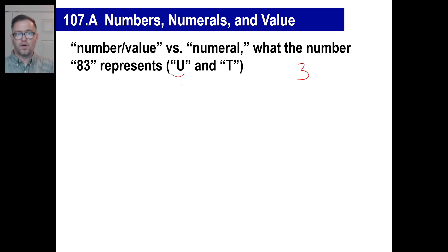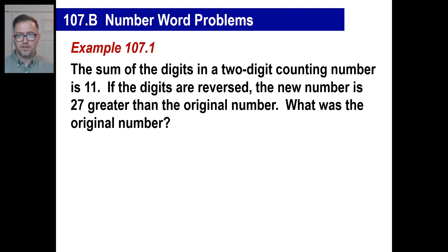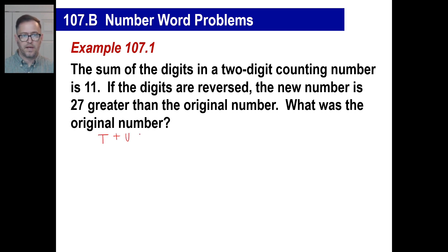We're going to use that to solve these new kind of word problems. First off, we're going to have two unknowns, which means we need two equations. So let's read this: 'The sum of the digits in a two-digit counting number is 11.' Stop right there. We have the sum of the two digits. Let's call the tens T, let's call the ones or units U. The sum of those two digits gives you 11 — that's one equation. We need another one.